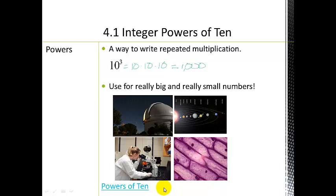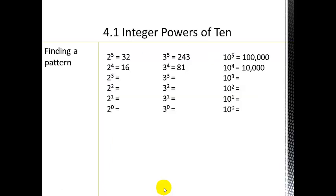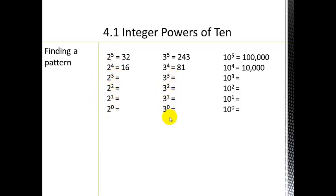Let's look at these numbers and see if we can find a pattern. Two to the fifth is equal to 32, because that would be 2 times 2 times 2 times 2 times 2. I want you to pause and take a few minutes to see if you can find a pattern within each of these.